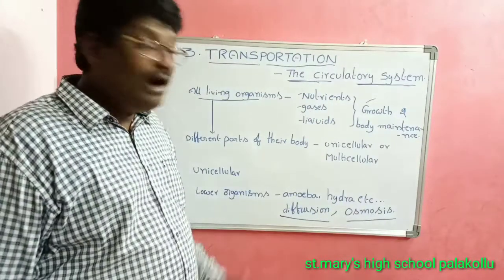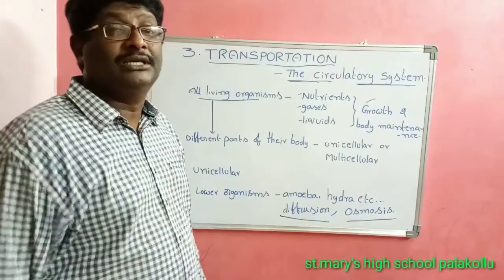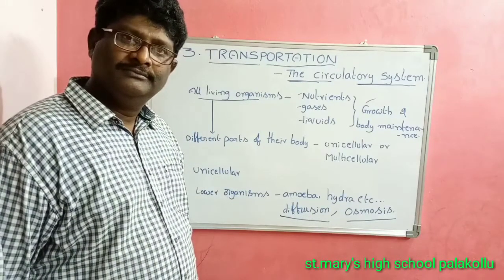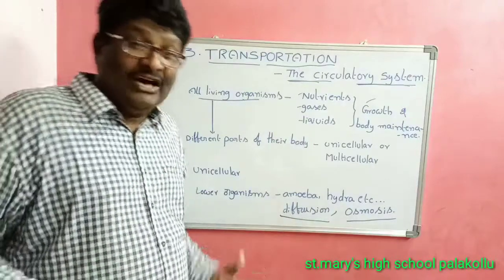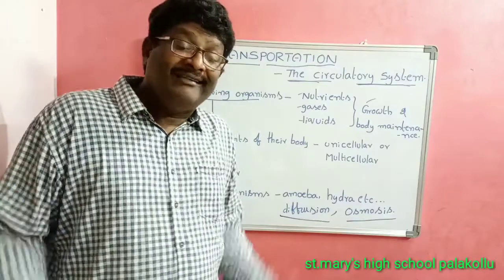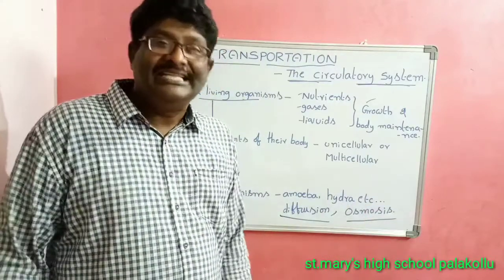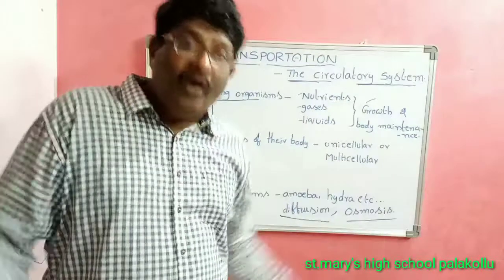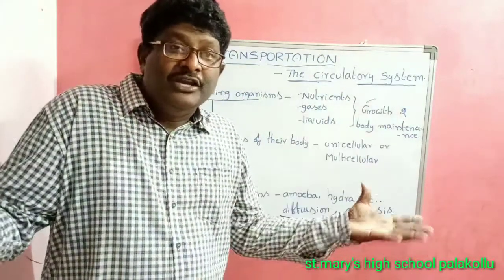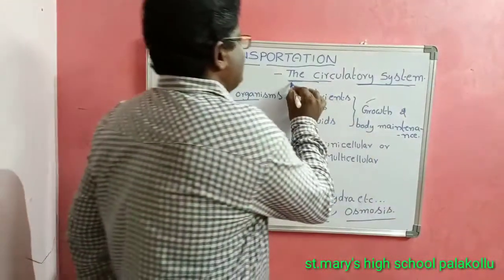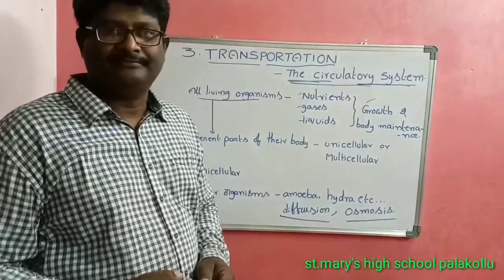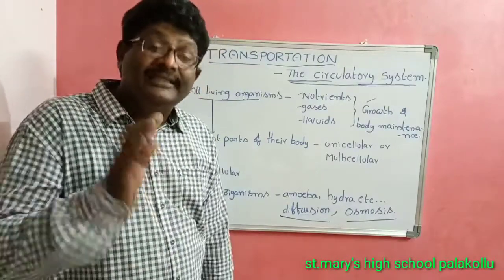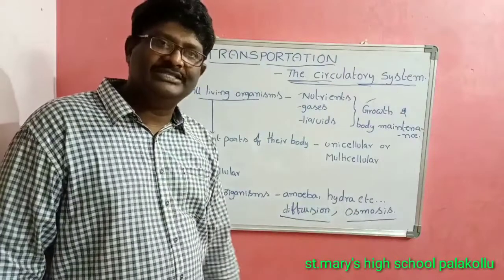So how do multicellular animals transport nutrients, gases, or liquids from one place to different parts of their body? For that, they developed another system to transport materials from one part to another part of their body. That system is called the circulatory system. In multicellular animals there is a special system for transporting materials, and that is called the circulatory system.